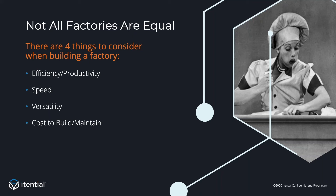In the manufacturing world, it's relatively easy to see that not all factories are equal. Factors such as efficiency and productivity, speed, versatility, and the cost to build and maintain the factory can and do differ in significant ways. These factors make all the difference in areas such as how many products that factory can generate in a given period of time, how quickly the factory can adapt to create a variety of products, and how many people are required to operate the factory.